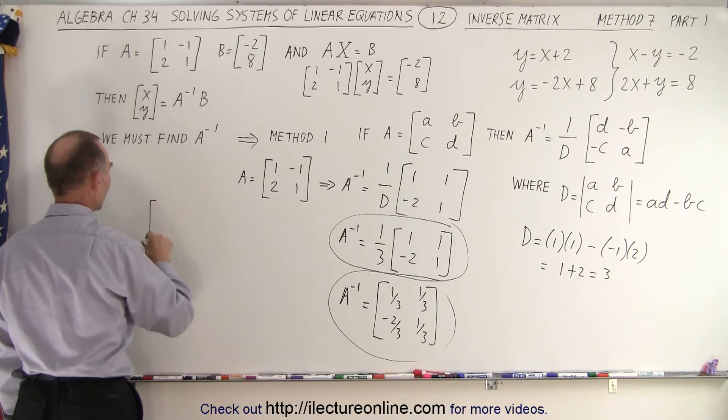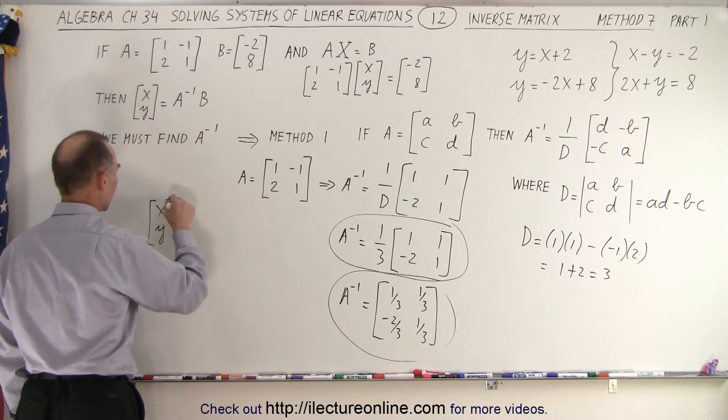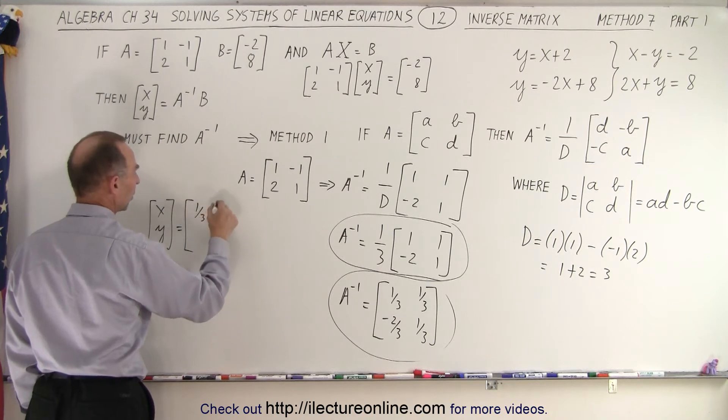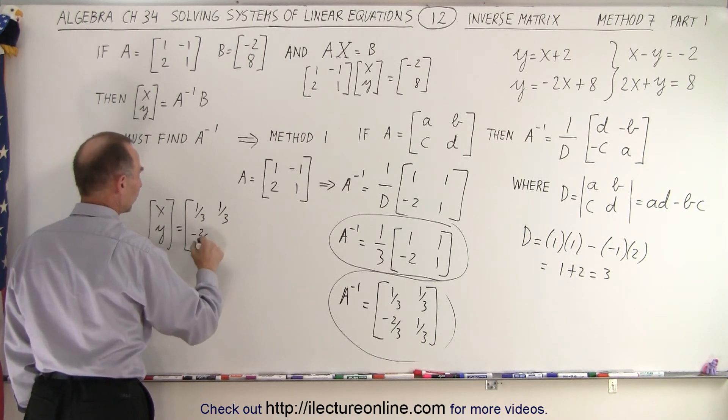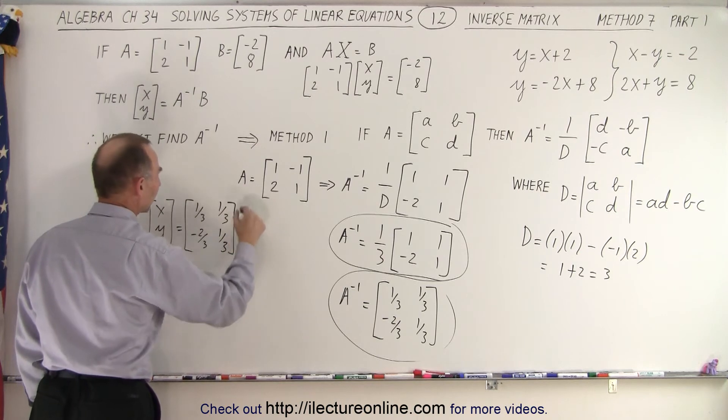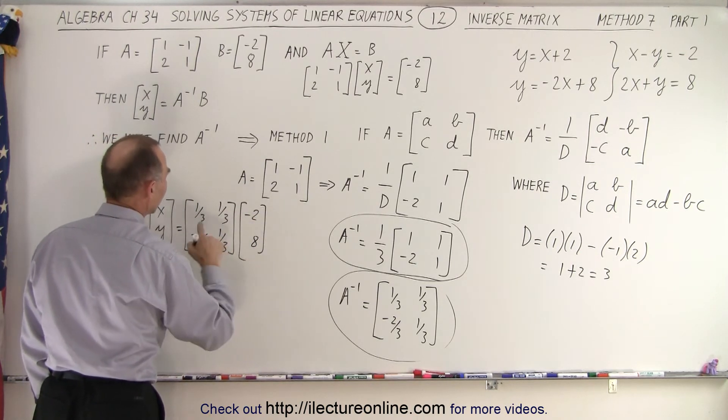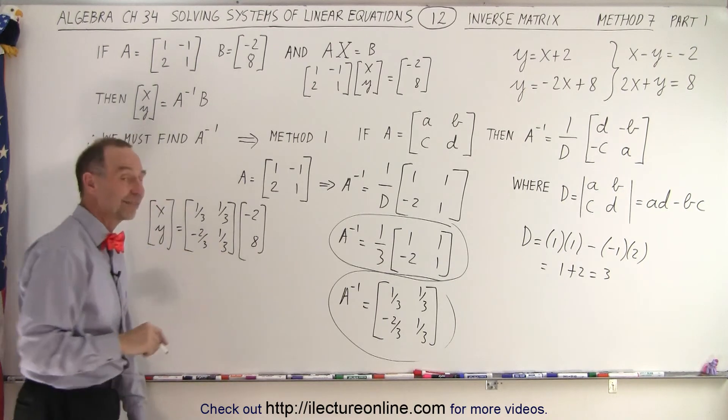So in other words, we can then say that X and Y is simply equal to this matrix, 1 third, 1 third, negative 2 thirds, and 1 third multiplied times the B matrix, which is negative 2 and 8. And that product will give us the values for X and Y.